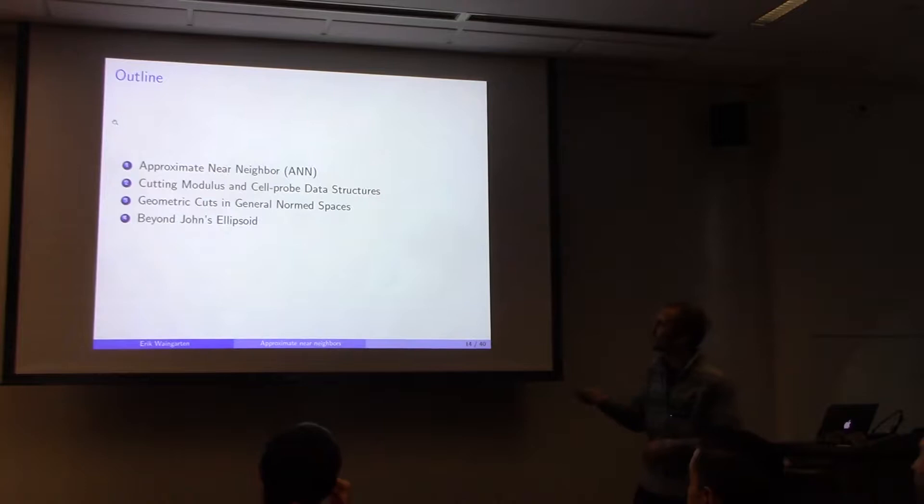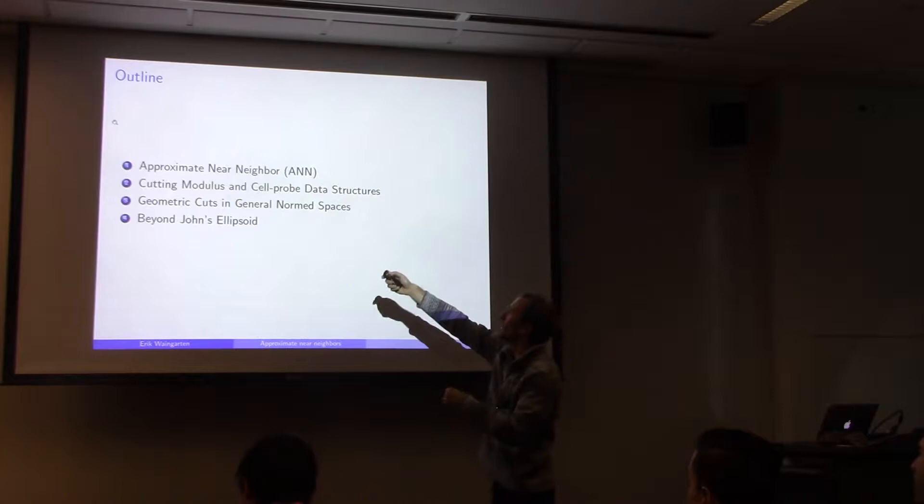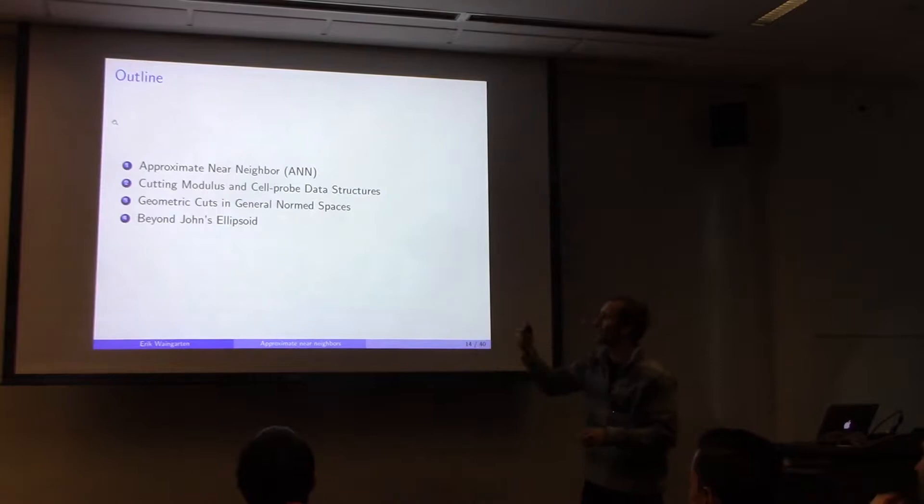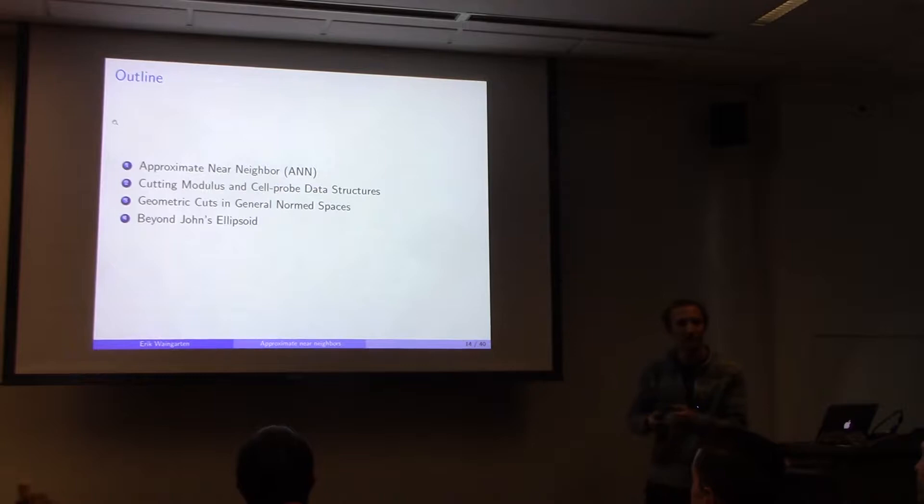Let me give an outline of the talk. We just covered the high-level ANN problem. Next I'll discuss the cutting modulus and cell probe data structures, then geometric cuts, and finally how to go beyond John's ellipsoid — beyond the sqrt(d) factor.